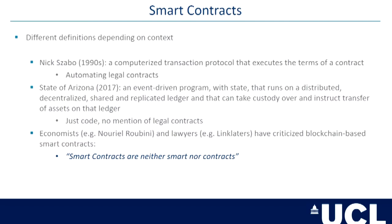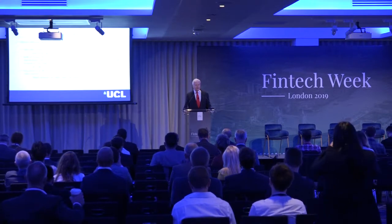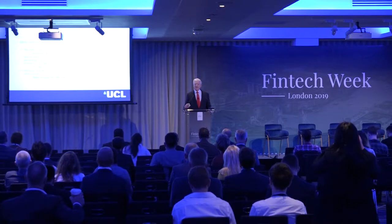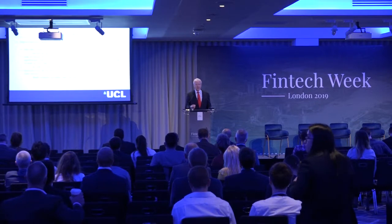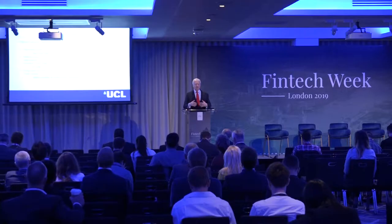The term smart contract is really problematic because if you talk to five different people, you'll get five different definitions. It was Nick Szabo back in the 1990s, around 1994, who first coined the term. He defined it as a computerized transaction protocol that executes the terms of a contract. He was clearly interested in automating legal contracts, and his intention was that smart contracts would be very broad.